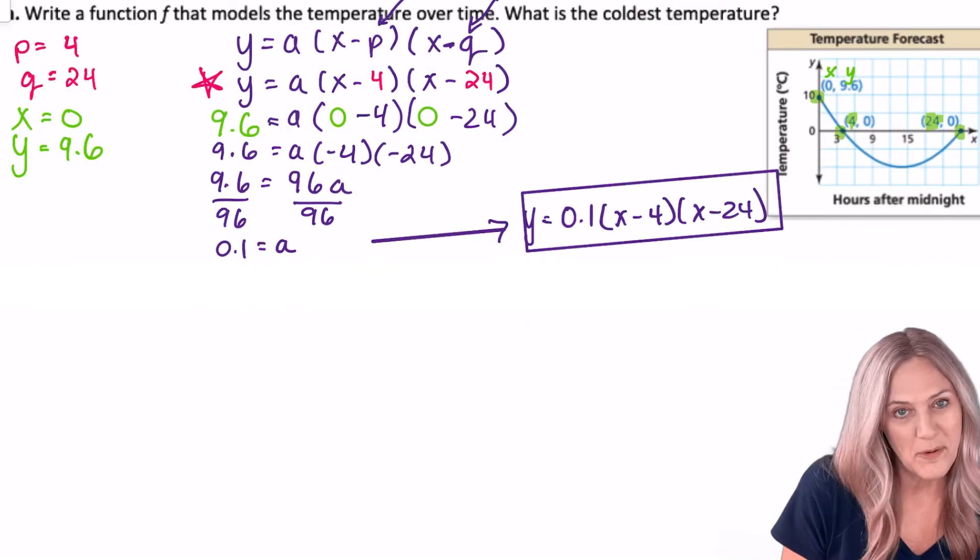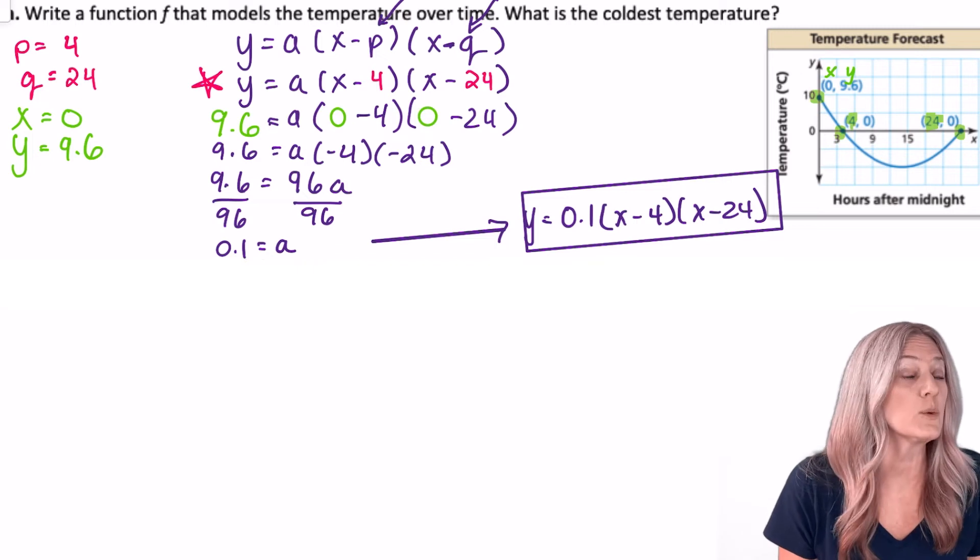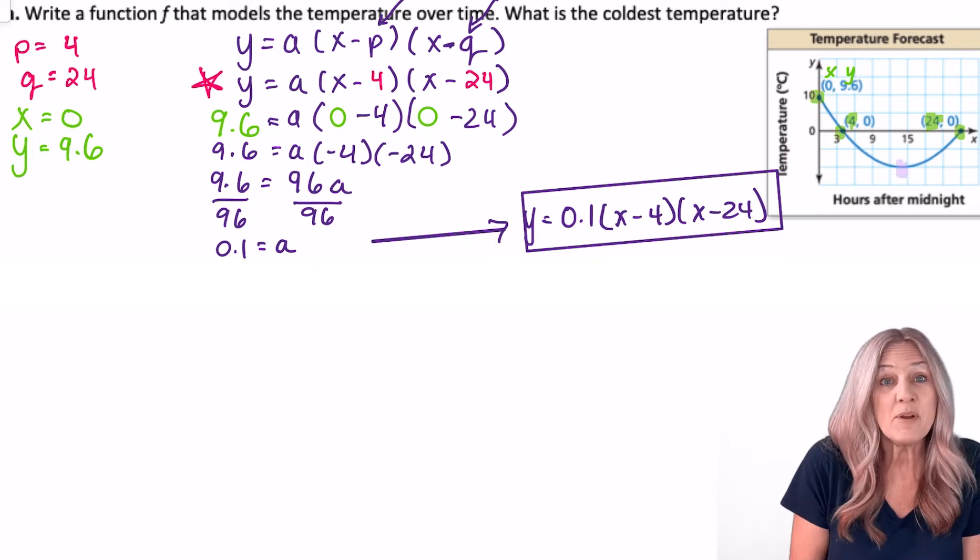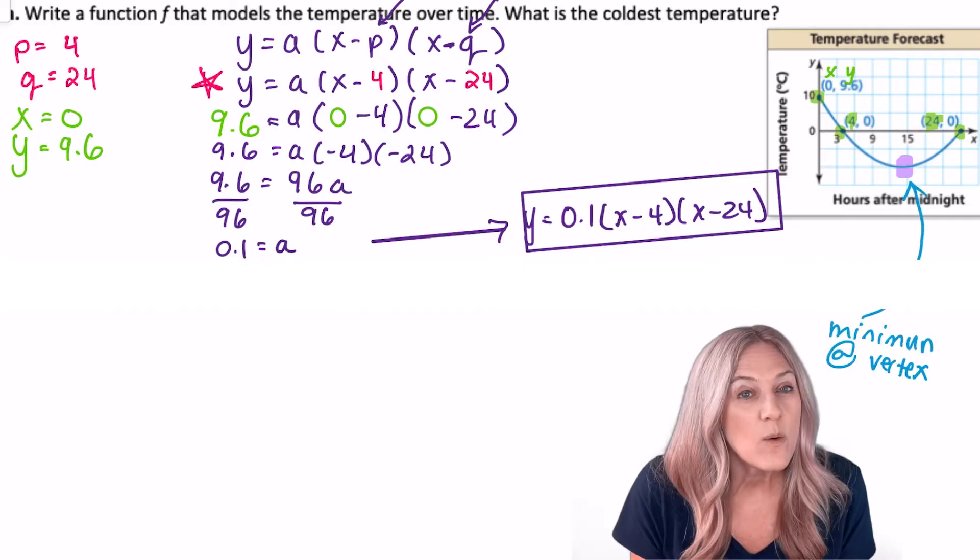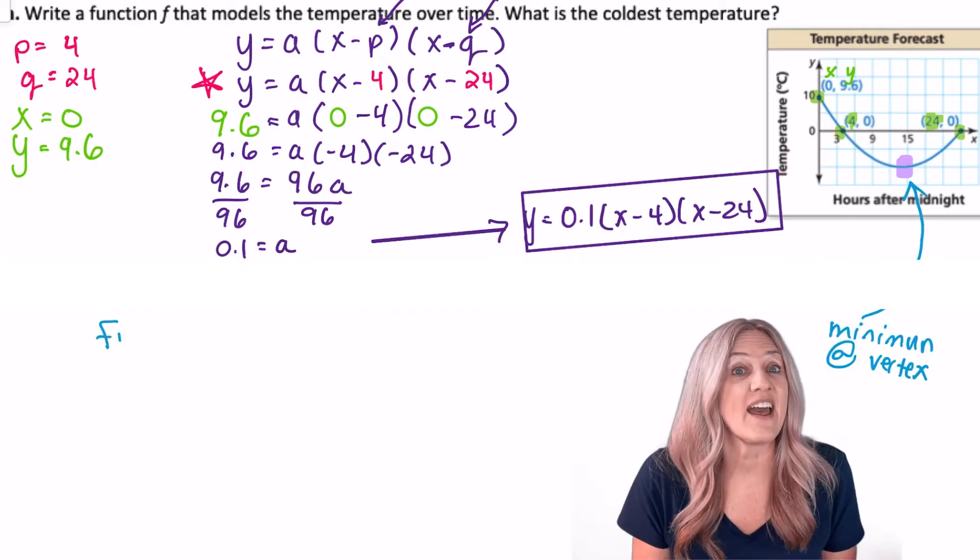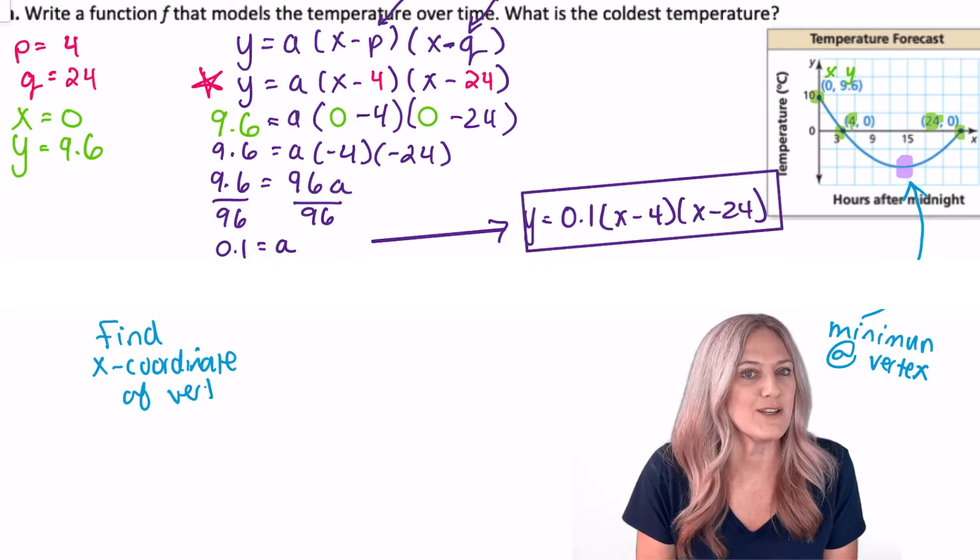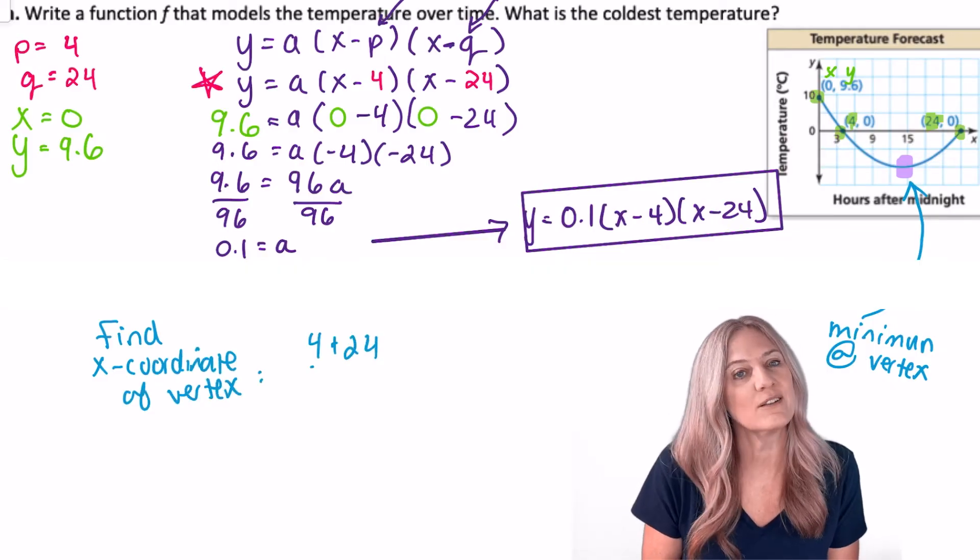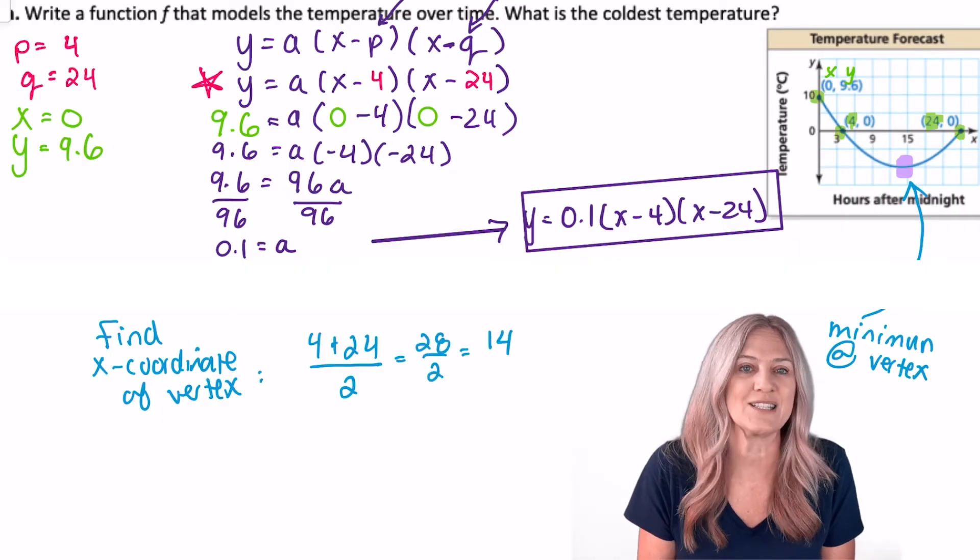All right, the follow-up question is, what is the coldest temperature? Well, where is that going to occur? The minimum value will be at the vertex, the coldest temperature. We know our x-intercepts. So we can find the x coordinate of the vertex simply by adding and dividing by 2. So 4 plus 24 is 28. Divide by 2, 14. The x coordinate of the vertex is 14.